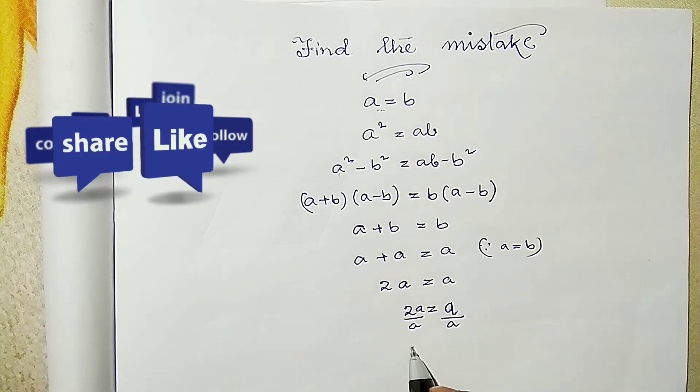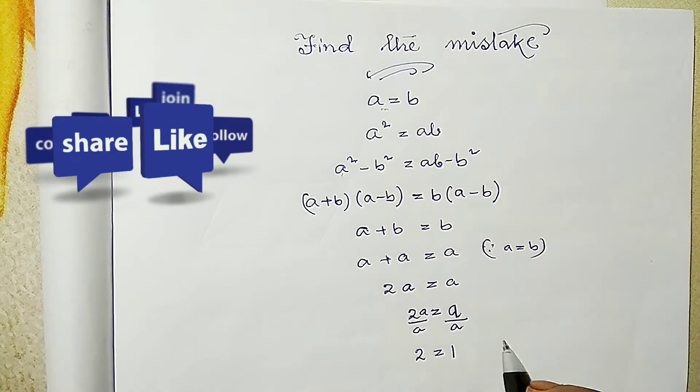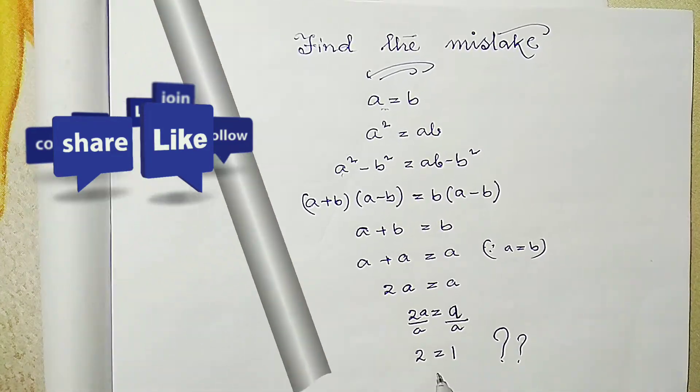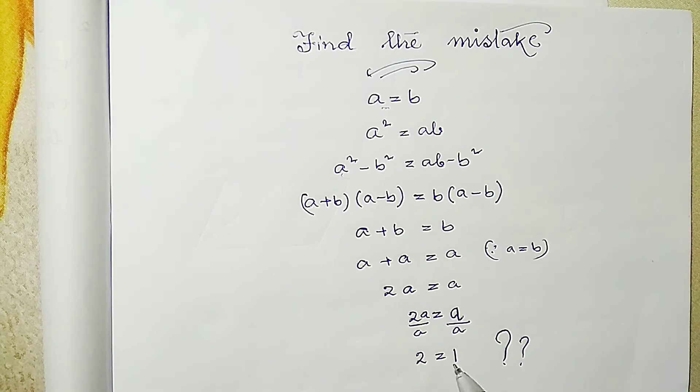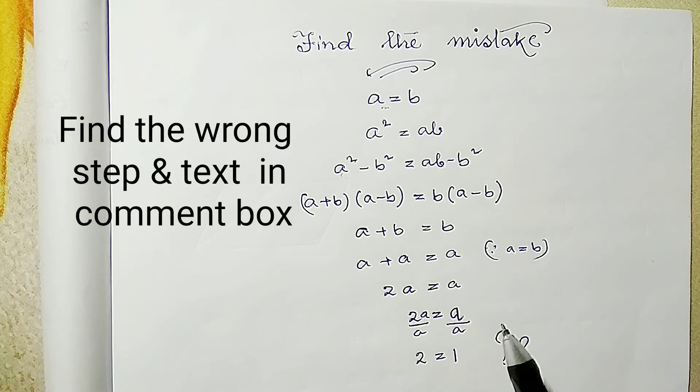Is it possible? As you have seen, I got 2 equal to 1. Is it possible? Definitely no. That means I must have done something wrong in this proof.